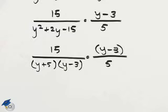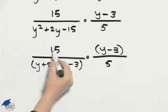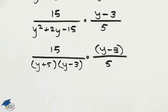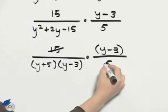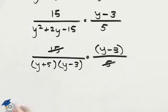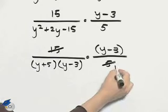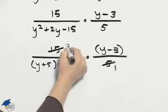Now we look at where we have some common factors, and I notice right away that 15 and 5 have a common factor of 5, so when I divide out the 5, I'll have a 1 and a 3.